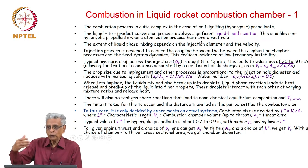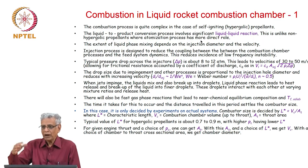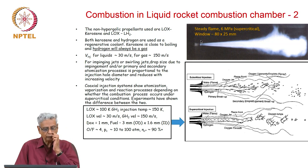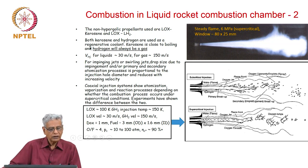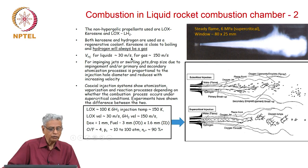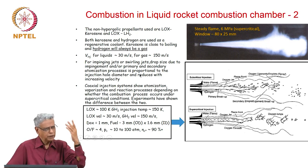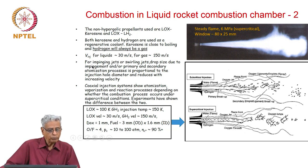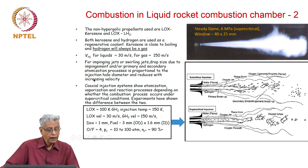We will discuss it on the way and you can come back with questions. For non-hypergolic propellants — kerosene and hydrogen — both are used as regenerative coolants. Kerosene is close to the boiling point and hydrogen will always be a gas. We inject liquids at about 30 meters per second and gases at around 150 meters per second. The density is low partly because of the higher pressure, so you need a larger cross-section. The drop size due to impingement or primary and secondary atomization is proportional to injector hole diameter and reduces with injection velocity.